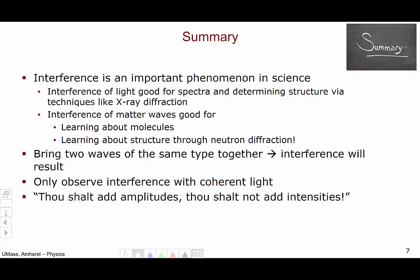So, in summary, interference is an important phenomenon in modern science, in that interference of light is good for looking at spectra to determine chemical composition, and interference of light is useful for techniques like x-ray diffraction to determine the structure of molecules. Similarly, the interference of matter waves is good for learning about molecular structure as well. One example is through a new technique called neutron interference. By bringing two waves together of the same type, I will always get interference.